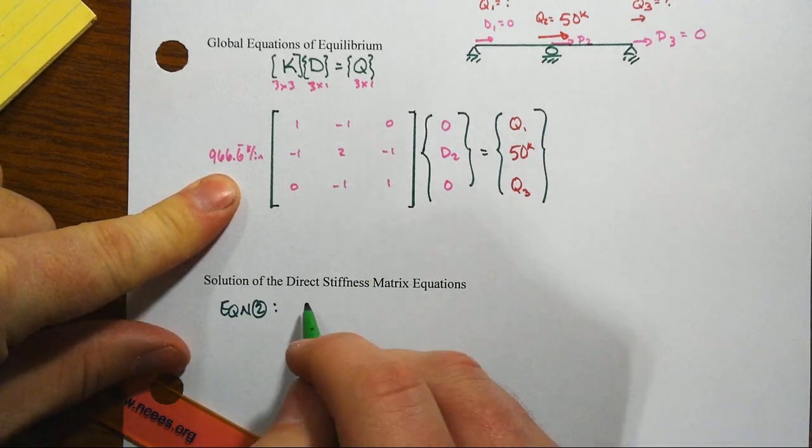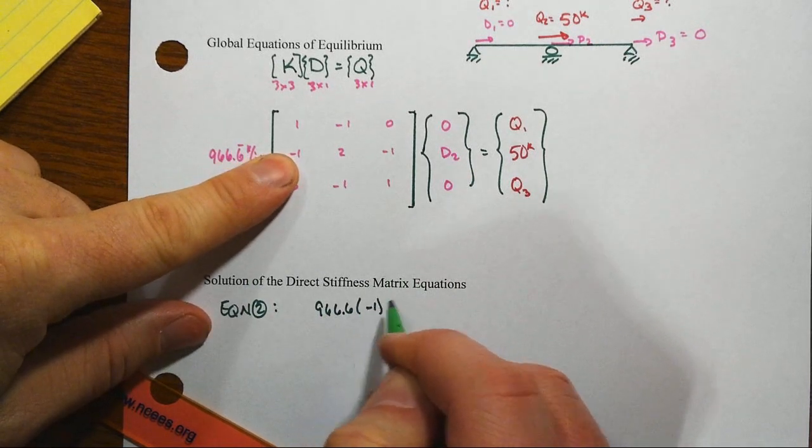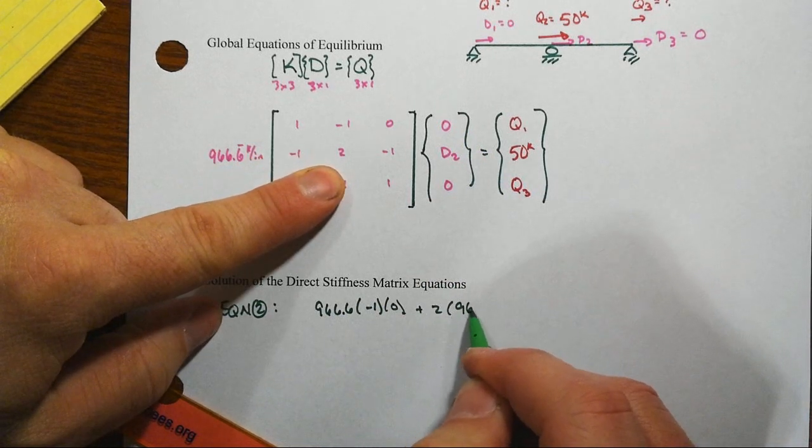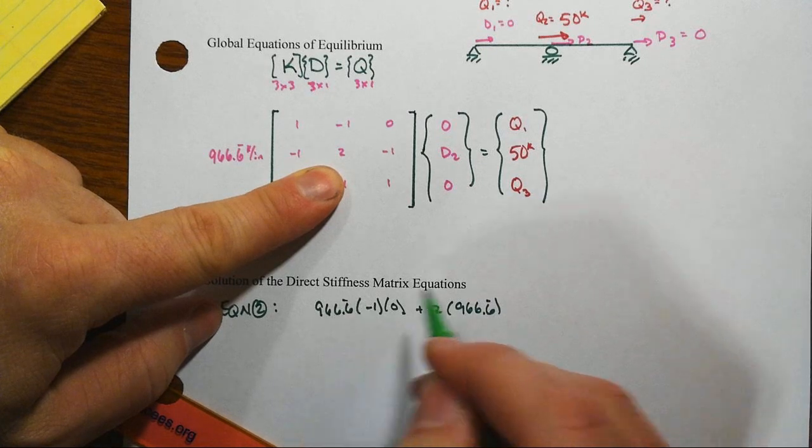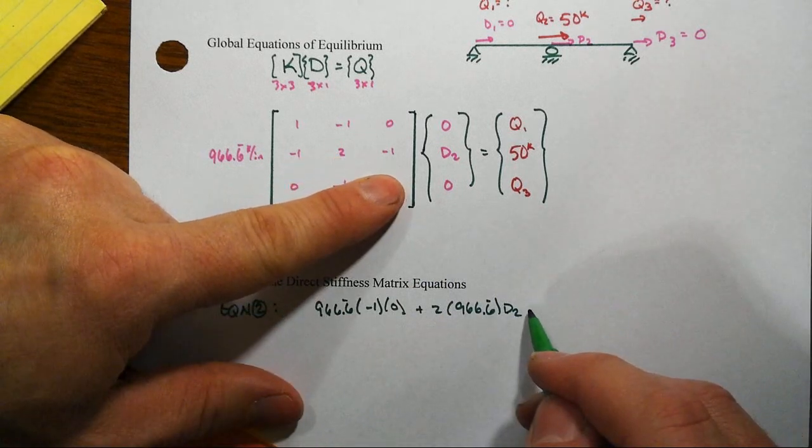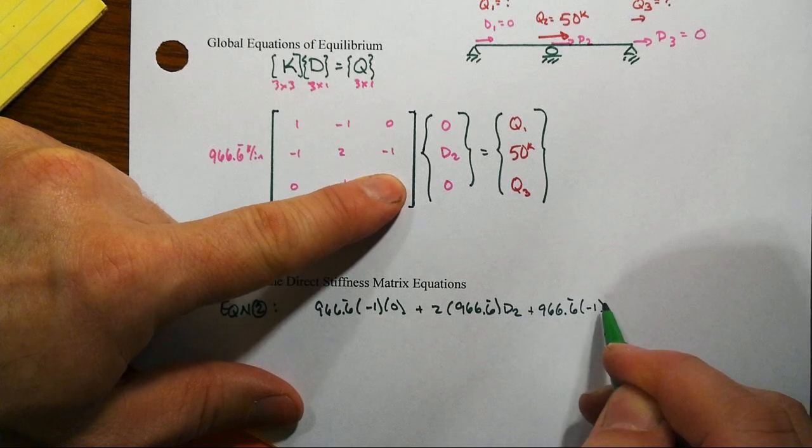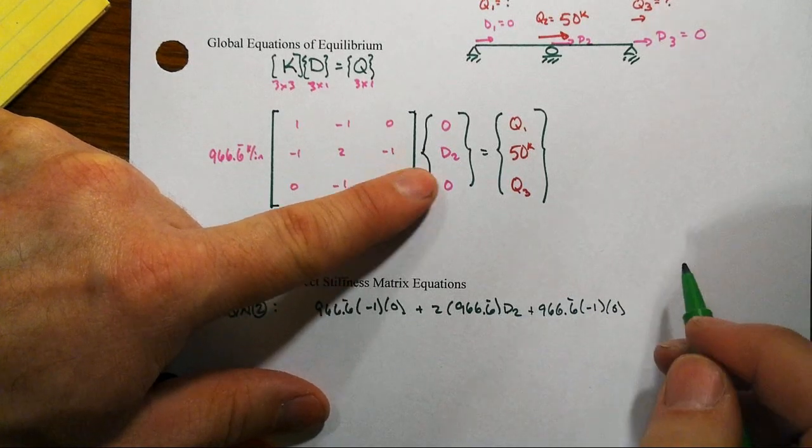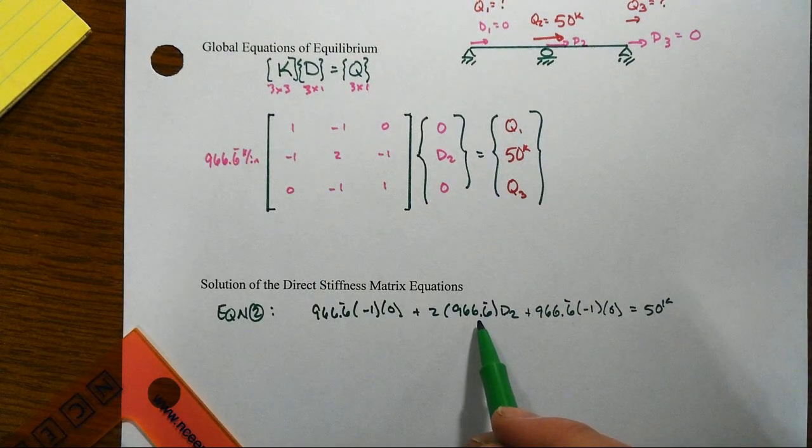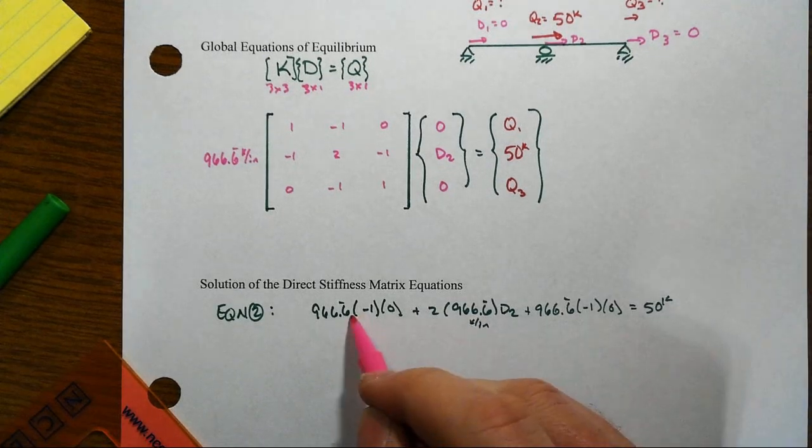We have 966.6 times minus 1 times 0, plus 2 times 966.6 times D2, plus 966.6 times minus 1 times 0 has to equal our 50 kips. Remember, we've got kips per inch as the units here.